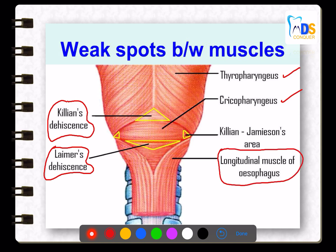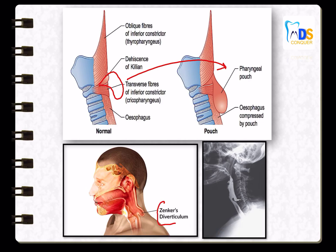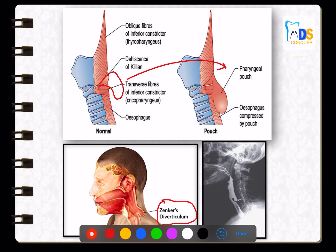The clinical significance of these weak spots: if the cricopharyngeus and thyropharyngeus muscles do not relax, food escapes through the weakest area to form a pharyngeal pouch. Killian's dehiscence is clinically important because it is the weakest area, leading to the formation of a pharyngeal pouch — also called Zenker's diverticulum. The muscles involved are thyropharyngeus and cricopharyngeus.